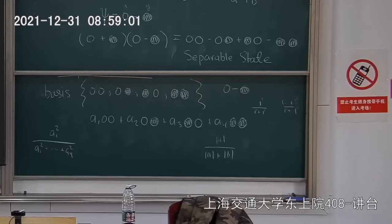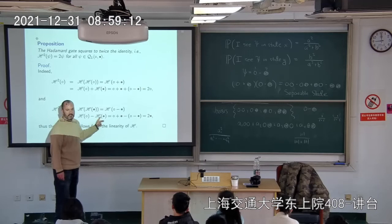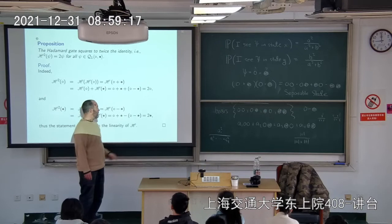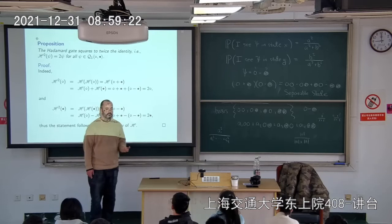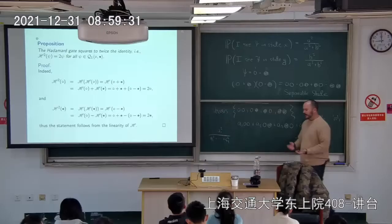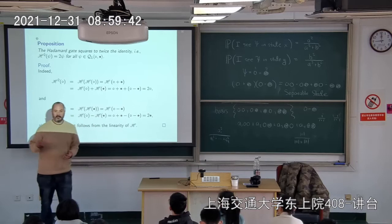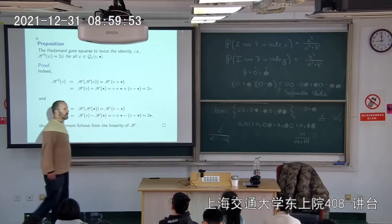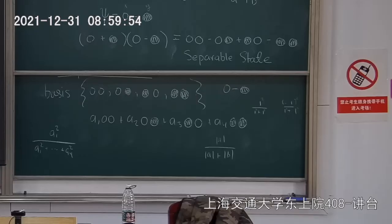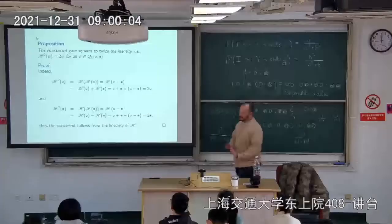Applying H twice to black: H(H(black)) = H(white − black) = (white+black) − (white−black) = 2·black. It always comes out black. This is not difficult to understand — the mathematics of quantum computing can be presented very simply, possibly even to high school students.